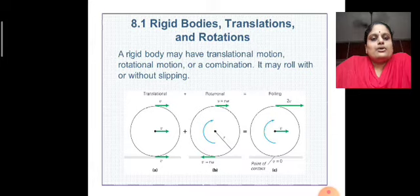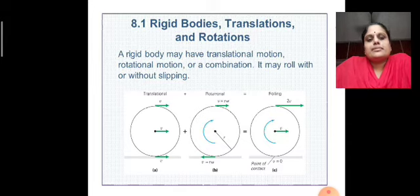Figure A shows its translational motion, that means motion along the x-axis. Rotational motion means it will be rotating along a particular axis. And rolling means it will have both translational and rotational motion.